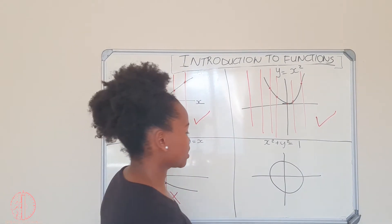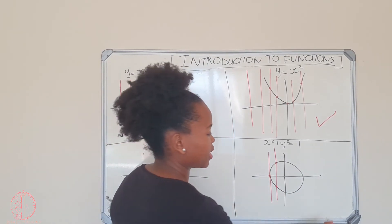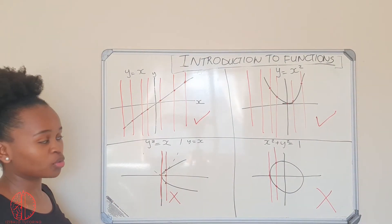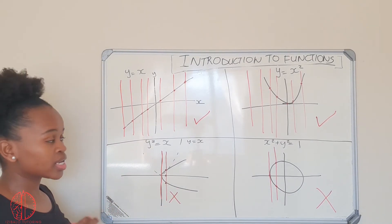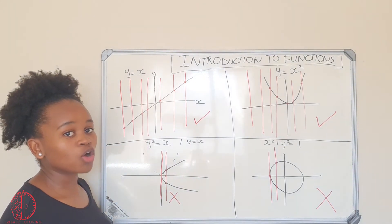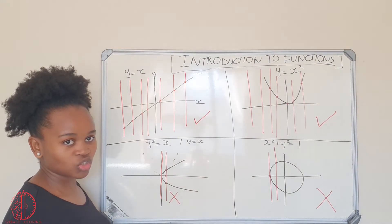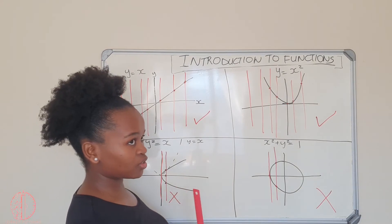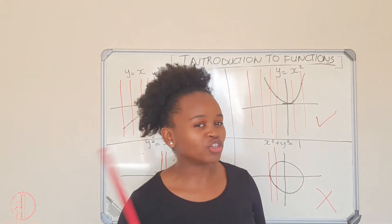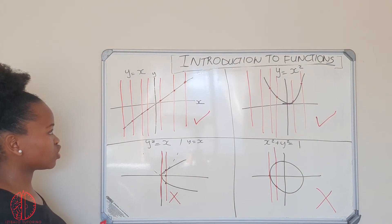For the last example, we do the same thing — we touch once at first, but moving to the next point we already see two intersections, confirming it is not a function. If the vertical line touches your graph once for every x value across the domain, it is a function. Now, to determine the type of function, we use the horizontal line test. Important: you can only use the horizontal line test on a graph you already know is a function.